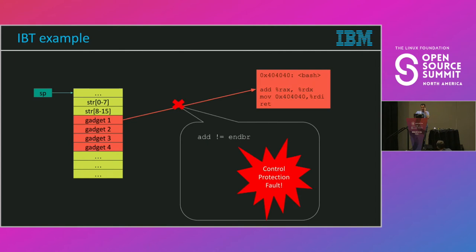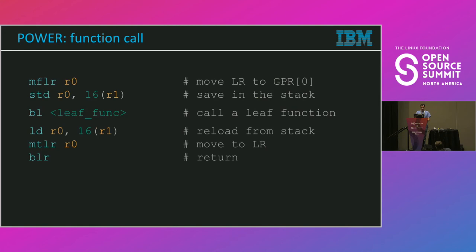Coarse-grained forward edge protection is implemented in ARM64 and x86. There is the special BTI instruction in ARM64 and the ENDBR instruction in x86. So if you have a gadget on the stack that, using some memory corruption technique, amended a call address and tries to call code that would do some bad things, and that code starts with ENDBR and not an ENDBR-compatible instruction, the CPU will detect that and cause a control protection fault on x86.